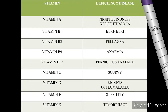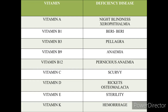Now let us discuss deficiency diseases due to vitamins. Vitamin A deficiency causes night blindness and xerophthalmia. Vitamin B1 deficiency causes beriberi. Vitamin B3 deficiency causes pellagra. Vitamin B9 deficiency causes anemia. Vitamin B12 deficiency causes pernicious anemia. Vitamin C deficiency causes scurvy.